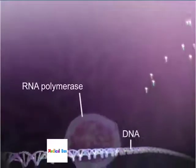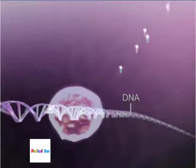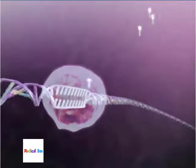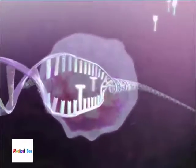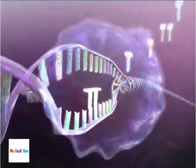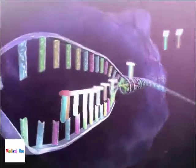The process begins when RNA polymerase opens the double helix of DNA, like the slider on a zipper. It unwinds the DNA double helix and pries the two DNA strands apart.